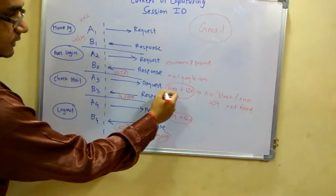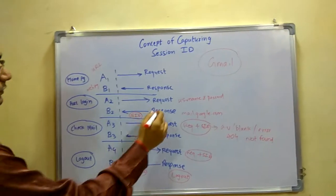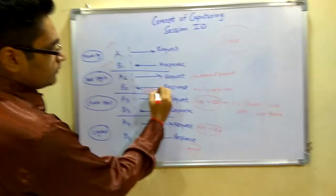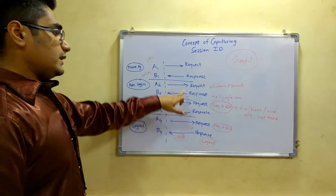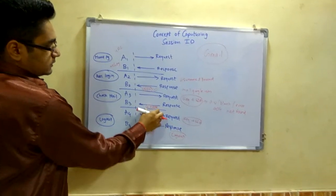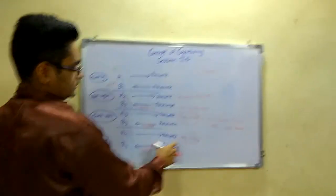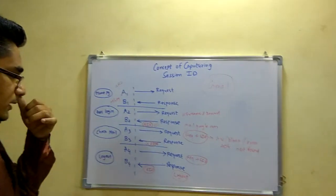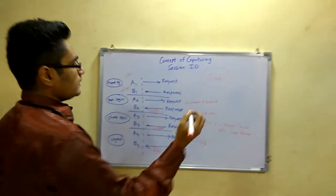To avoid that, you always have to capture a session ID from the request above it. That is, if this is a request then you have to capture the session ID in the response of the post-login. So you would be capturing the session ID here, not here — at least one request above. So this is the concept of how to capture the session ID.